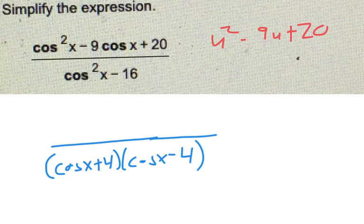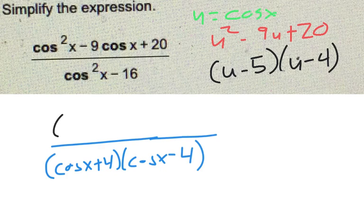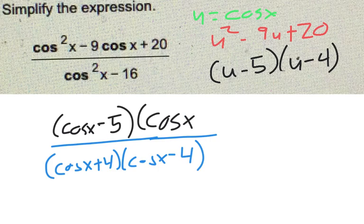But what multiplies to be 20 but subtracts to be negative 9, this should be u minus 5 times u minus 4. But remember, we just put u down. We let u represent cosine of x. So this really factors to be cosine of x minus 5 times cosine of x minus 4.